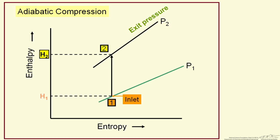On the enthalpy-entropy diagram, I am showing two constant pressure lines. These are not going to be straight lines, but on this scale, for what we are interested in, they are approximately straight. We are going to enter at a lower pressure and leave at a higher pressure, so pressure two is greater than pressure one.